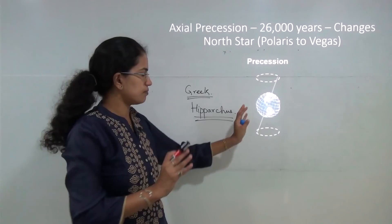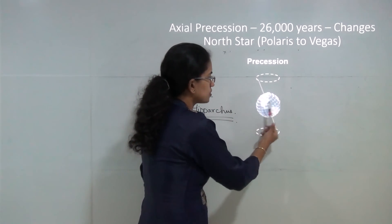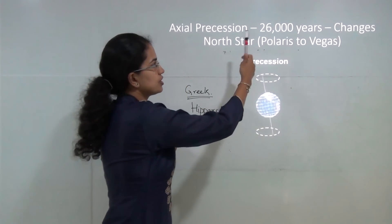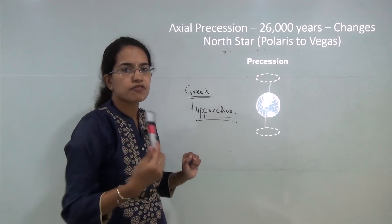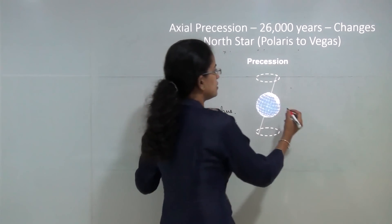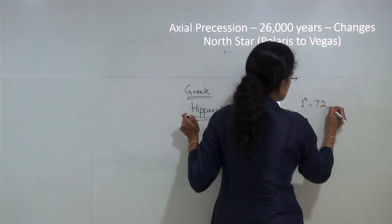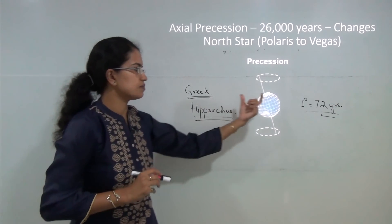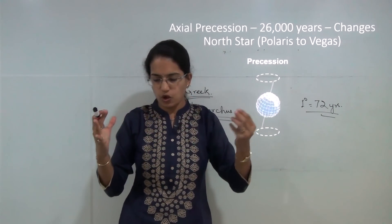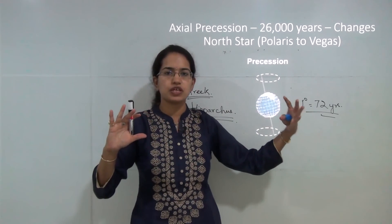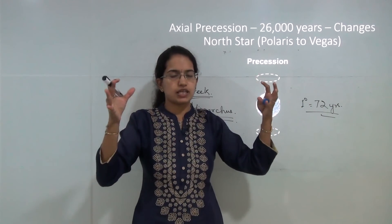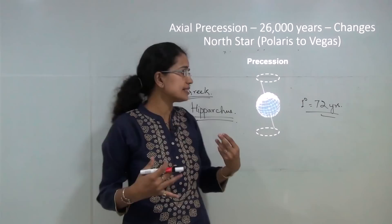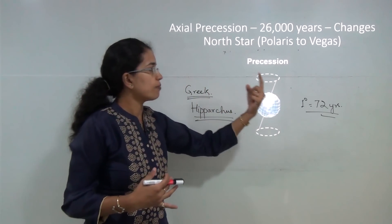The axis of the earth takes 26,000 years to complete one full precession. The rotation of the earth should be very fast relative to this, as rotation takes every day while precession takes 26,000 years. One degree of precession is moved in about 72 years. Precession is mainly caused by the non-uniform gravitational pull between the sun and the moon acting on the earth, combined with the irregular bulge of the earth, resulting in this wobbling.